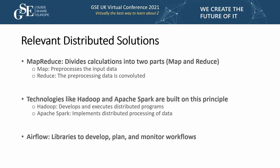Apache Spark is an open source framework for distributed processing of unstructured and structured data. Unlike Hadoop, it implements MapReduce not on intermediate drives but in RAM, giving a significant gain in data processing speed. Airflow is a set of libraries for developing, planning, and monitoring workflows. Its main feature is that Python code is used to describe processes, meaning your ETL project is essentially a Python project that you can organize as you like.